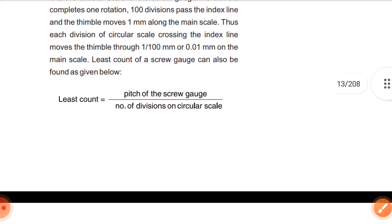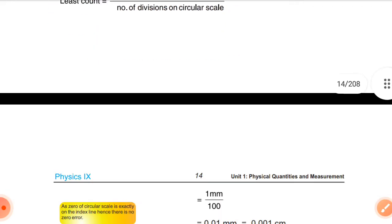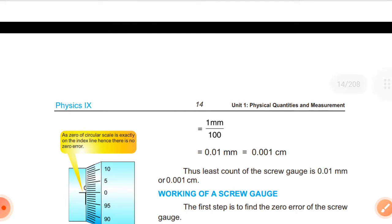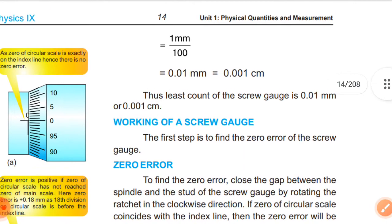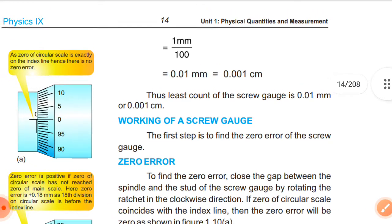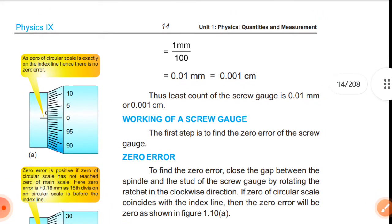The pitch of the screw gauge divided by the number of divisions on the circular scale. So it is 1 millimeter divided by 100, so we get 0.01 millimeter. And if you convert it into centimeter, then it will be 0.001 centimeter.